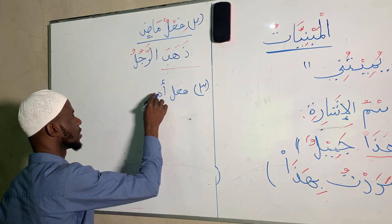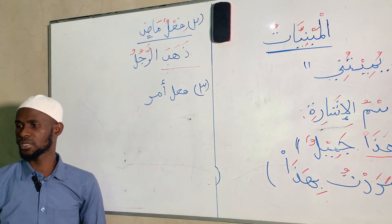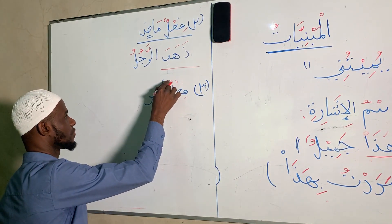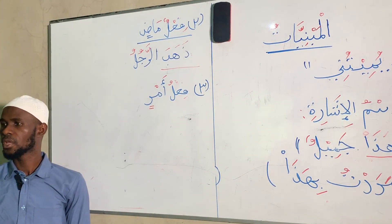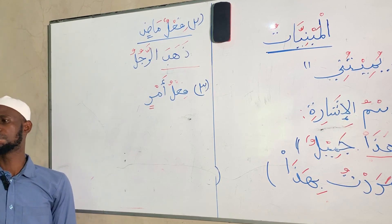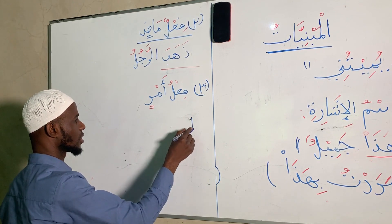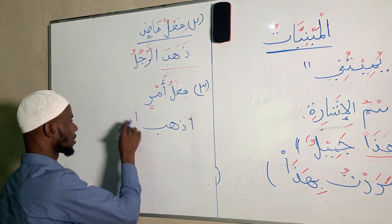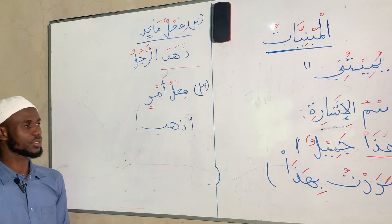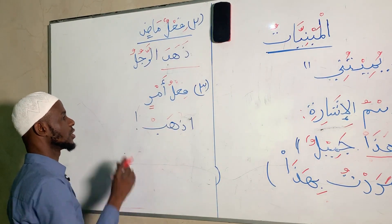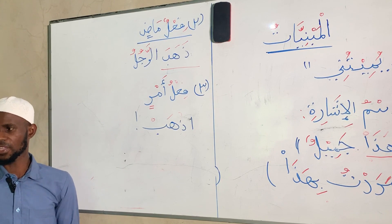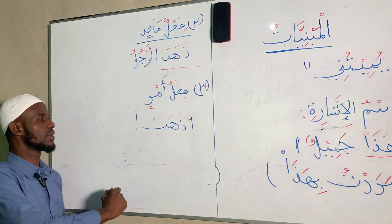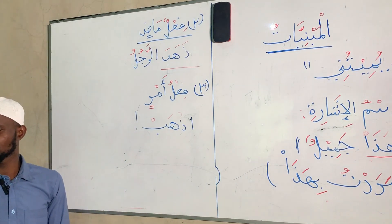Another aspect is Fi'lul Amri — the command verb. All command verbs have a stagnant end. For example, instead of Dhahaba, if I am commanding the person to perform the action of going, I say Idhhab. The end is stagnant with Sukun. The basis of the past verb's end is Fath; the basis of the command verb's end is Sukun. So you say: Idhhab — Mabniyyun 'ala al-Sukun.